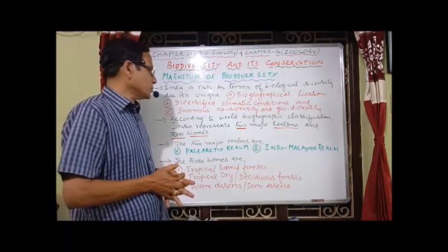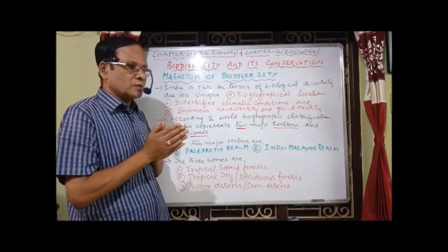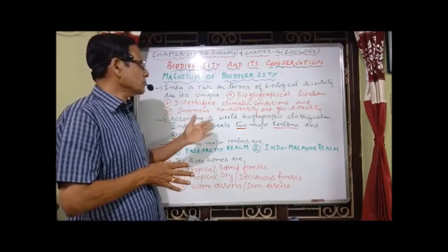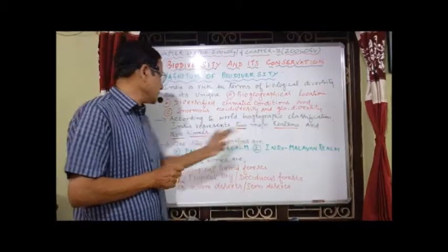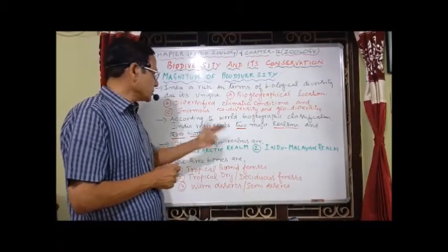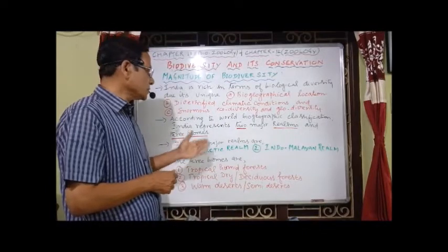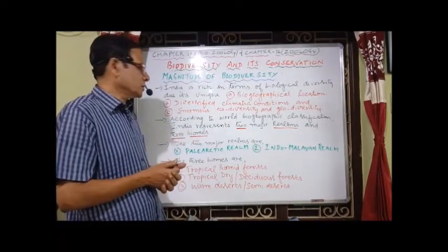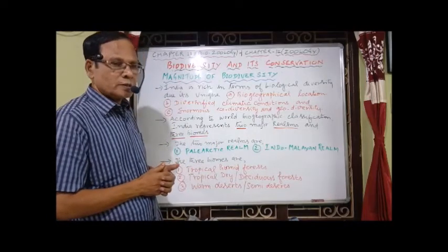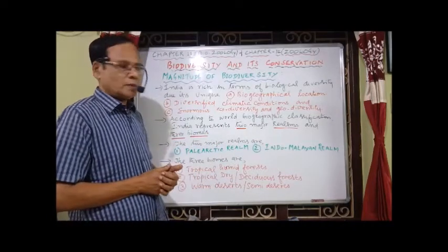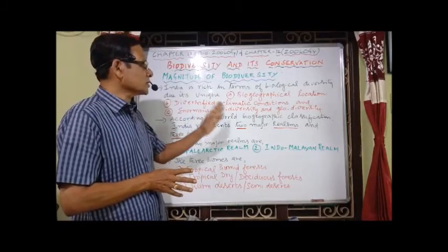According to the World Biographic Classification, India represents two major realms and three biomes. The two major realms are the Palearctic realm and the Indo-Malayan realm. The three biomes are: tropical humid forests, tropical dry or deciduous forests, and warm deserts or semi-deserts.